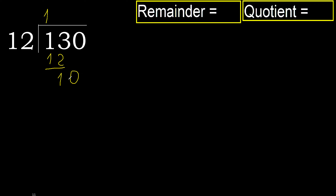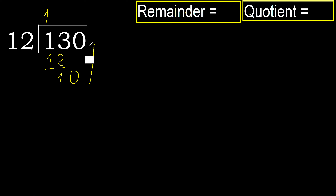Next. Bring down 10. 10 is less, therefore next. That is not a number, therefore finish it. Therefore complete. Always complete with 0 — complete because here we finish with this number.